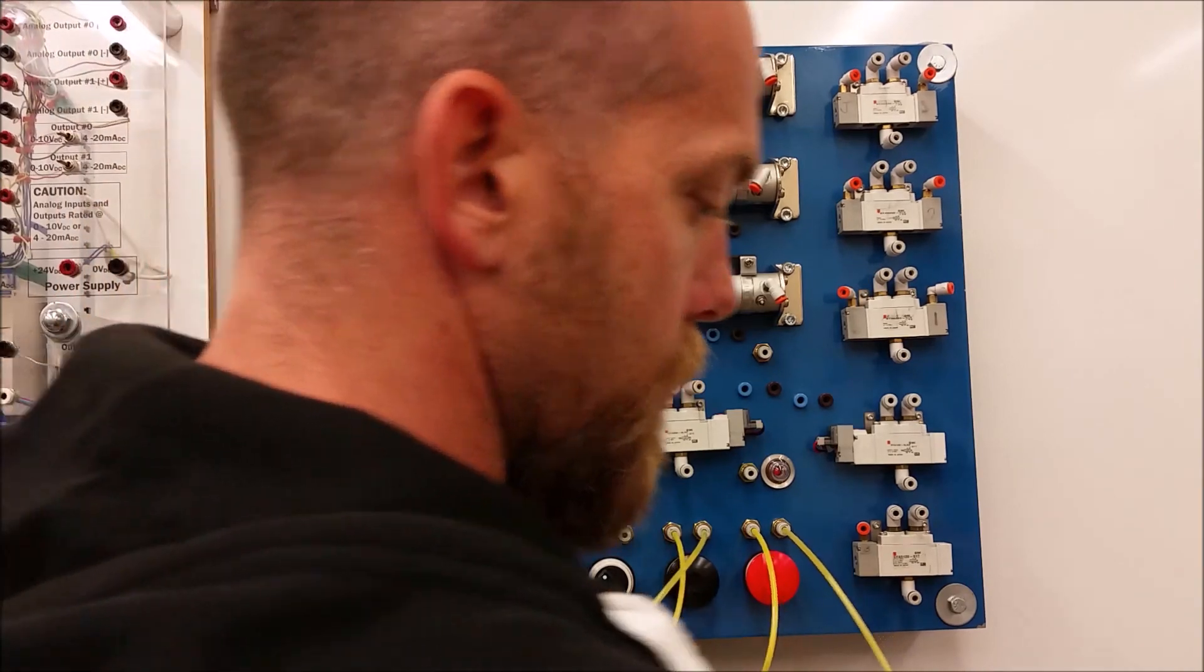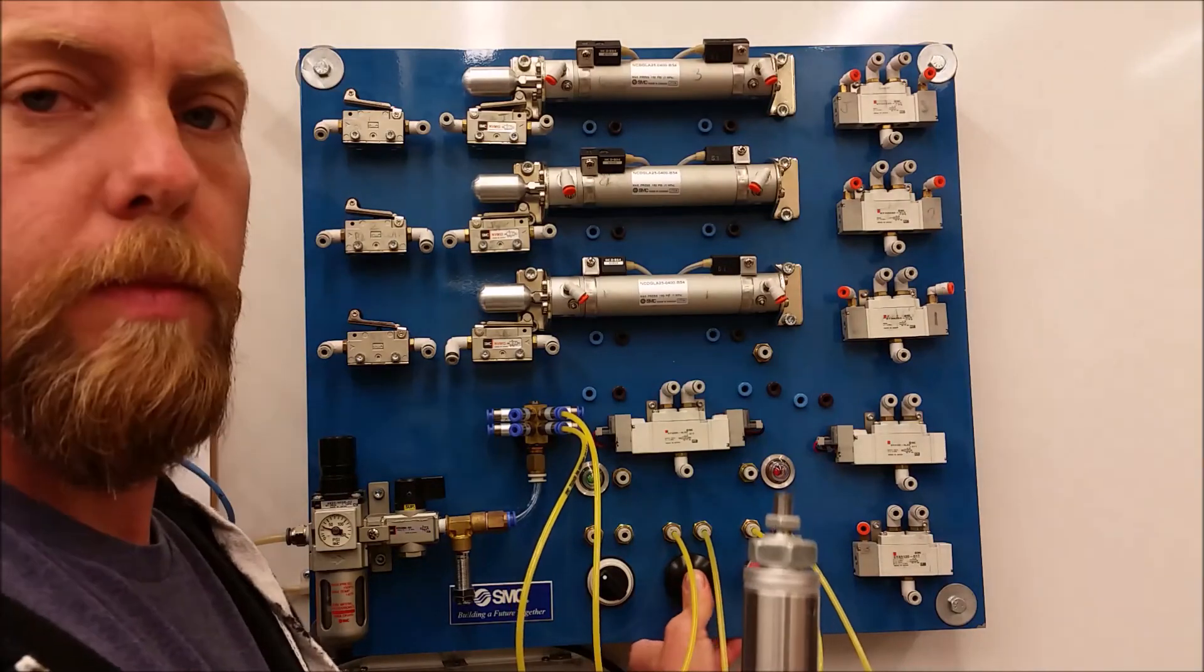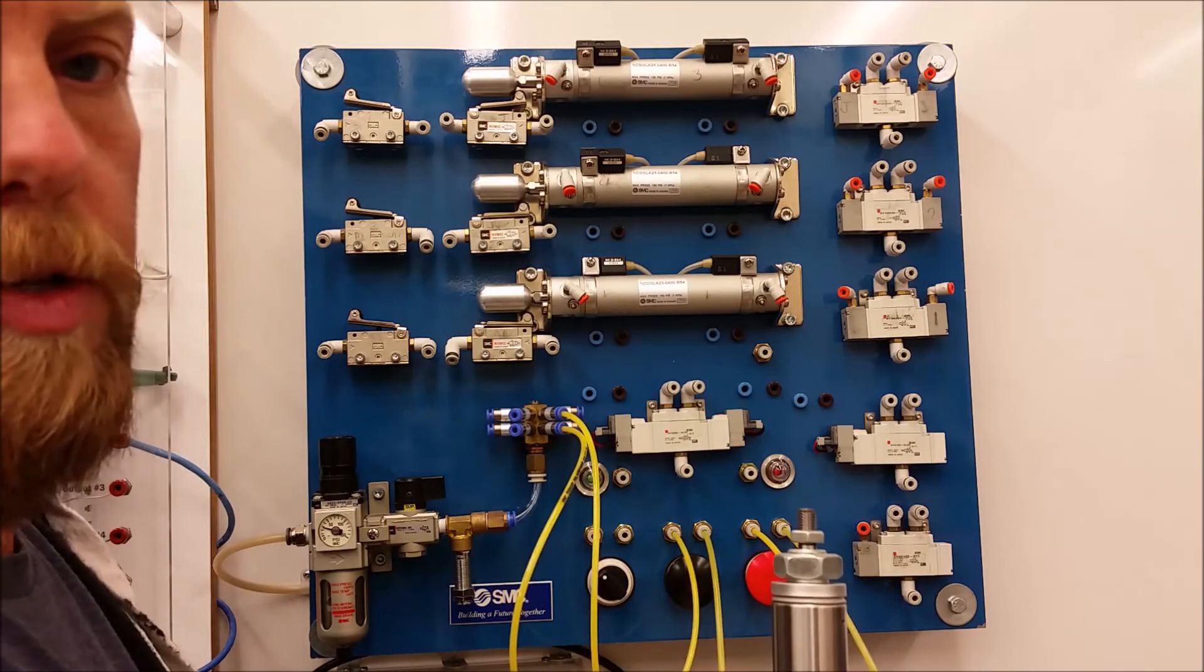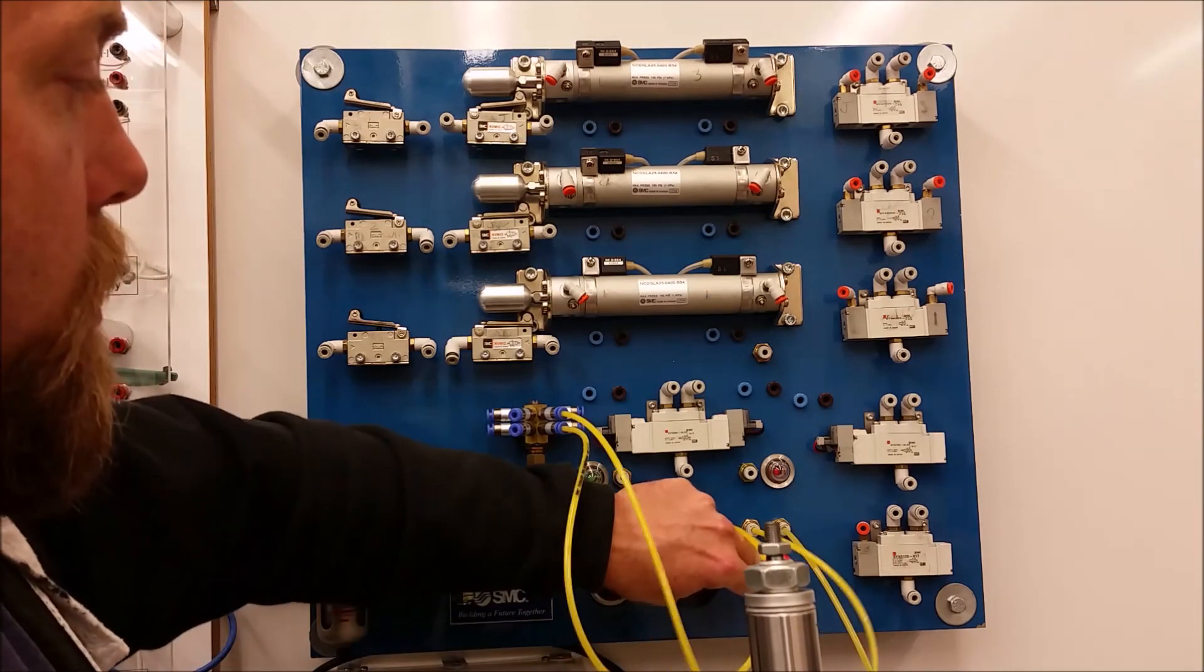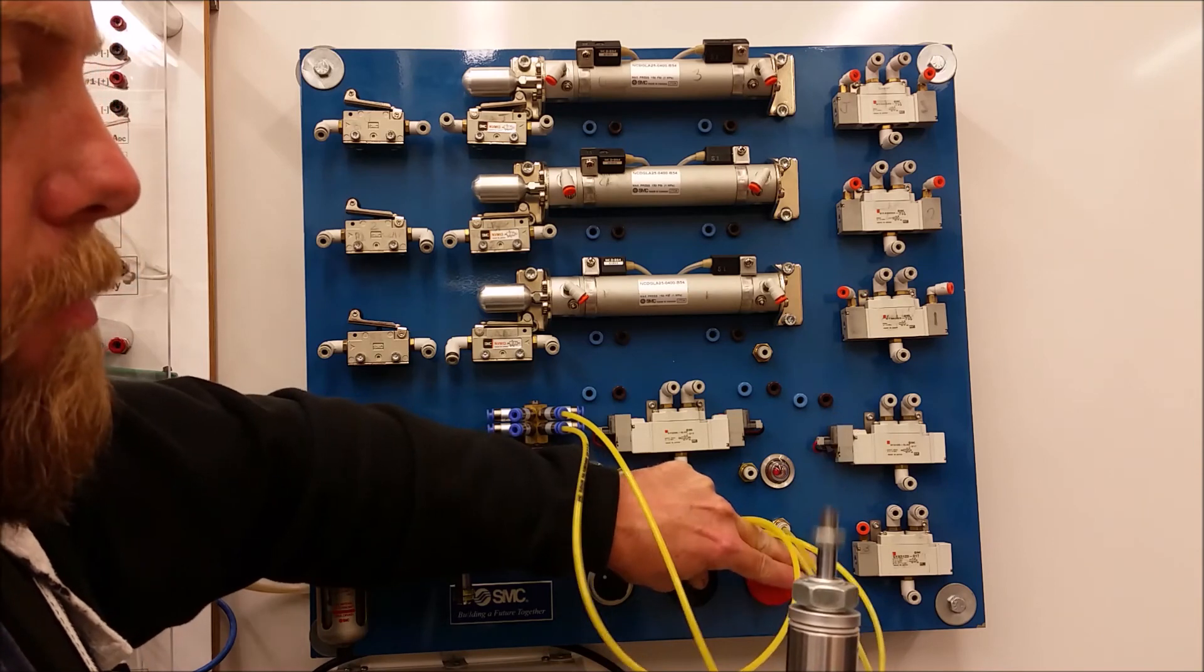Let's see: we have one push button, nothing; second push button, nothing. This is supposed to be an AND circuit, so if we press this and this, then it extends. Let go of either one of them, and it's going to retract.